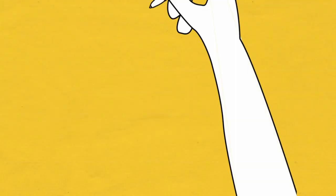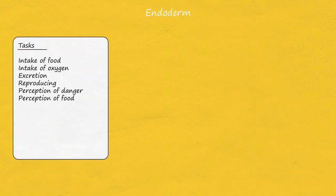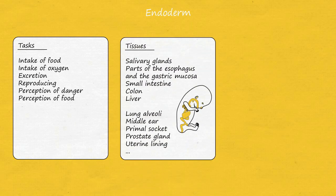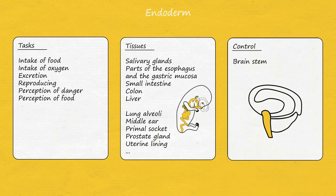In the first part of pregnancy, the endoderm forms all the tissues for later ingesting food and oxygen, excreting, reproducing, and rudimentary perception of the environment in terms of danger or food. These include the majority of the digestive tract, the lung alveoli, the middle ear, the primal socket that will later form further parts of the eye, the prostate gland, the uterine lining, and various other tissues. The associated control centers of these tissues are located in the oldest part of the brain, the so-called brain stem.